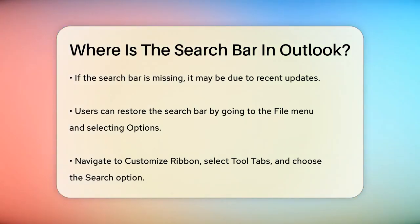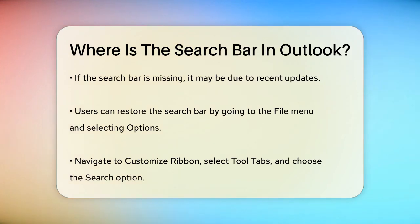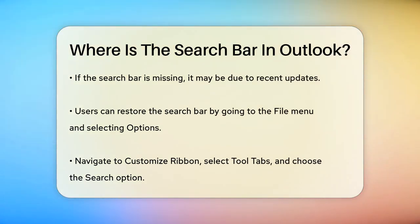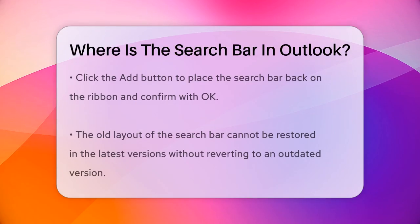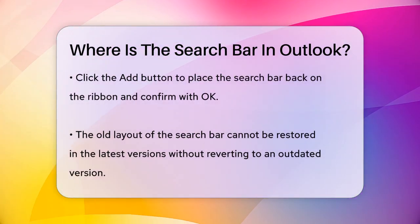If you're missing the search bar altogether, there could be a few reasons for this. Sometimes updates can cause the search bar to disappear. In such cases, you can easily add it back. Here's how: Open Outlook, go to the File menu, and select Options. Then navigate to Customize Ribbon, select Tool Tabs, and choose the Search option from the Search Tools area. Click the Add button to move it to the right side, and then click OK.